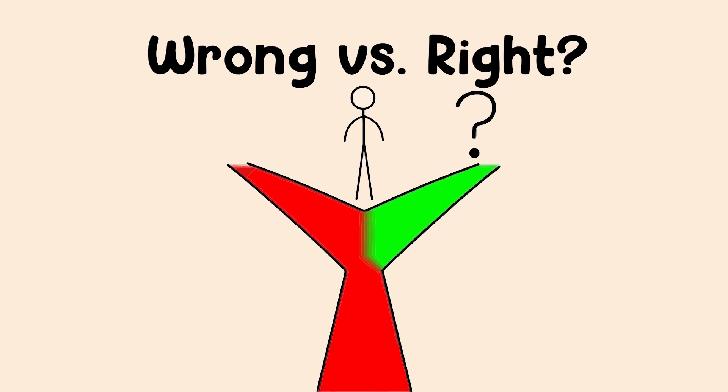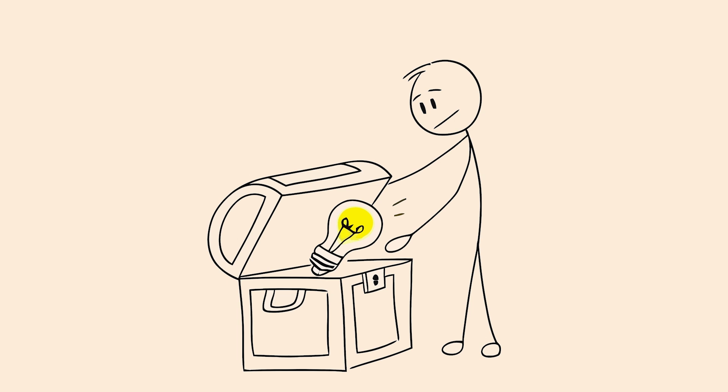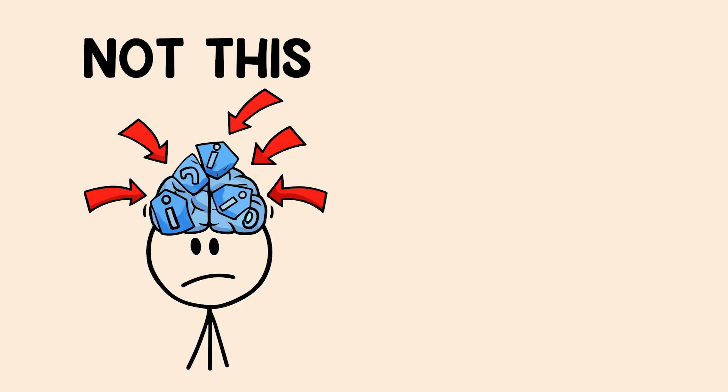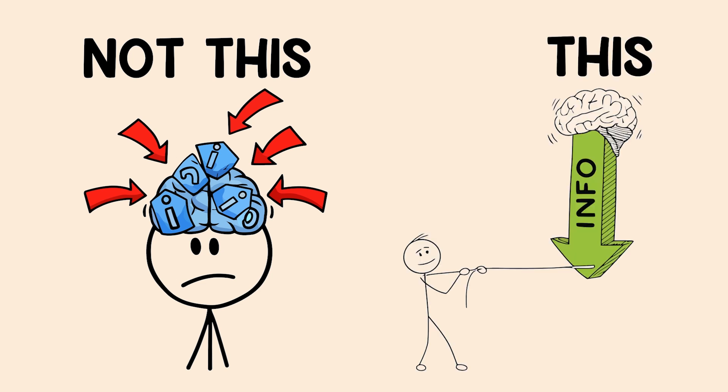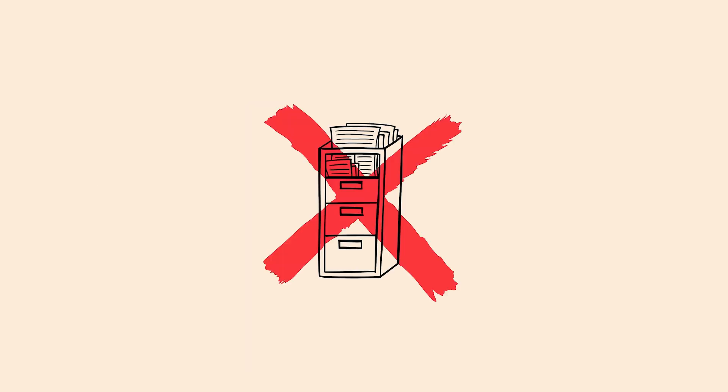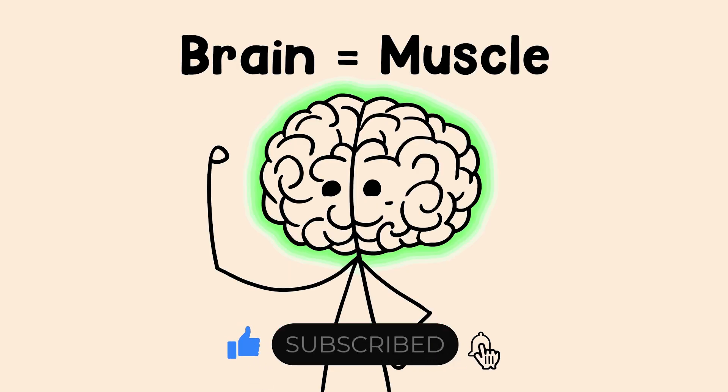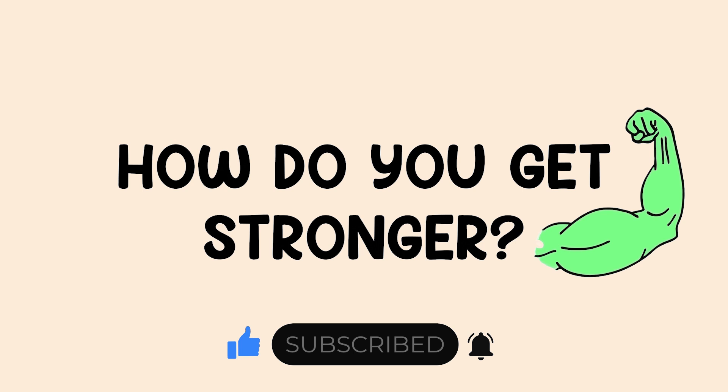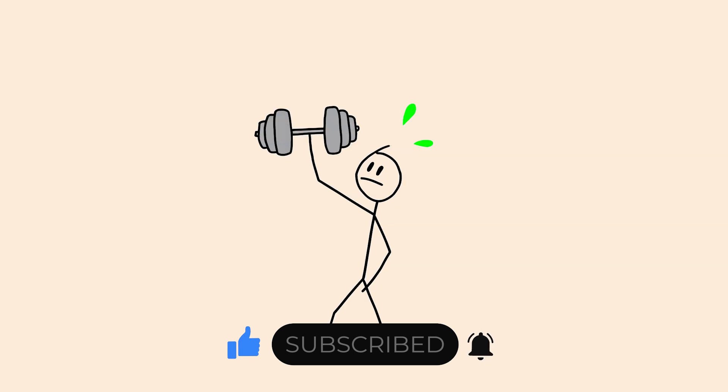So if everything we've been told to do is wrong, what's right? Here it is. This is the big secret. The key to a super memory is not about passively pushing information into your brain. It's about the effortful struggle of pulling information out. I want you to stop thinking of your brain as a filing cabinet you just stuff things into. Start thinking of it like a muscle. And what's the only way to make a muscle stronger? You have to work it.